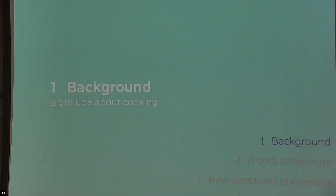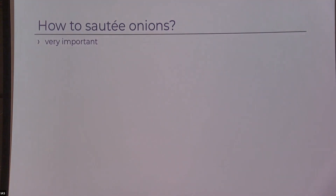We're going to start with a prelude about cooking. I know that everybody's hungry. The first question that we're interested in is how to sauté onions, which is a very important question. We want to think about it as a computational problem — an algorithmic problem.